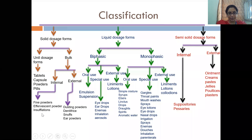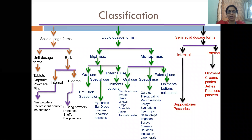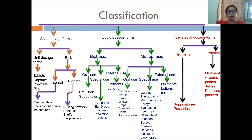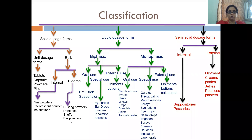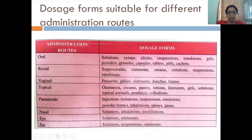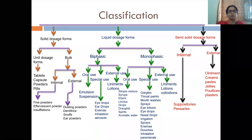Examples for internal bulk dosage forms are fine powders, effervescent powders, and insufflations. In external dosage form, we have dusting powders, dentifrices, snuffs, and ear powders. Dentifrices means to maintain buccal hygiene — for example, tooth powder. You can also make a mouthwash. So dentifrices can be in solid or liquid dosage form. This was our solid dosage form classification — unit dosage form and bulk dosage form.